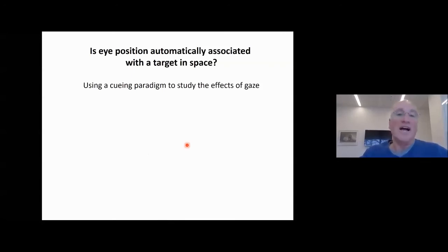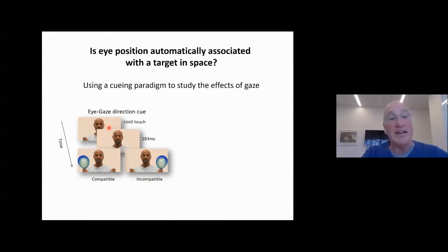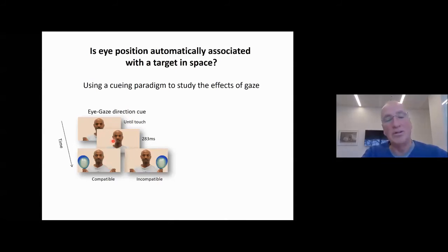Is eye position automatically associated with a target in space? We used a cueing paradigm to study the effects of gaze, keeping it very simple. The subjects see a face first looking at them, then moving its gaze either to the right or to the left. Then a target — a balloon — would show up, and the kids' task was to touch the balloon as fast as possible. If gaze serves as a cue, like the Posner task, and if you detect and decipher the gaze, you touch the object when it appears in the direction of the observed gaze faster than when it's incompatible with the previous gaze cue.